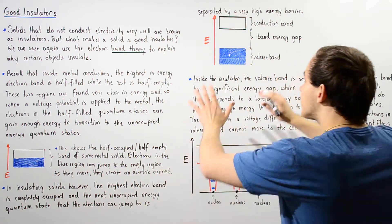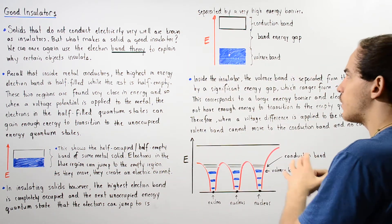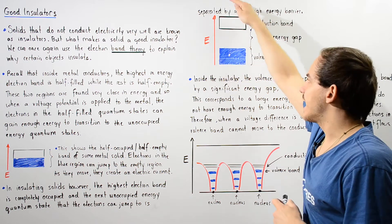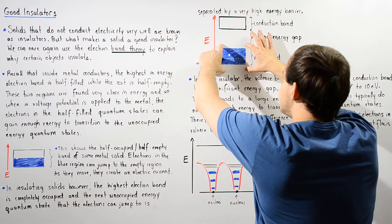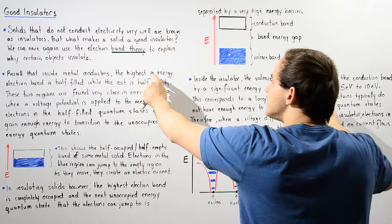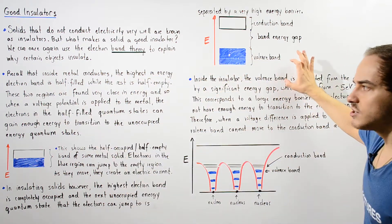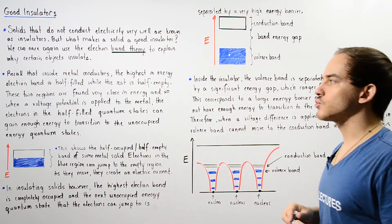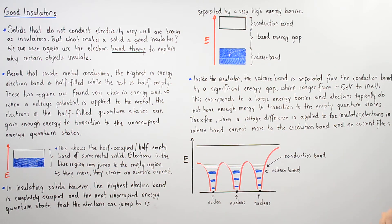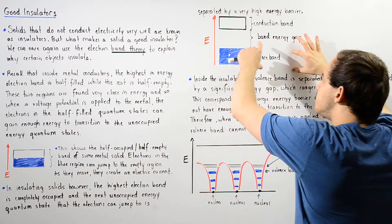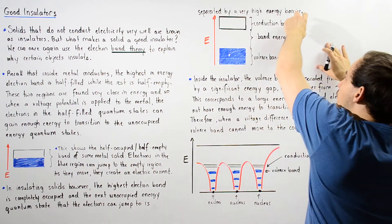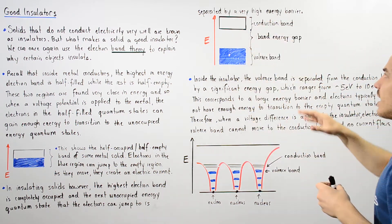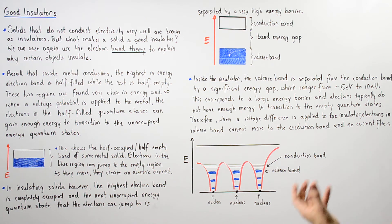Looking at the diagram, the y-axis is our energy. This is our completely filled, highest-in-energy electron band, normally known as the valence band, because it contains the outermost electrons of our atom — the valence electrons. Notice this valence band is separated from our conduction band — the next in line — by a very high energy barrier known as the energy gap or band energy gap.